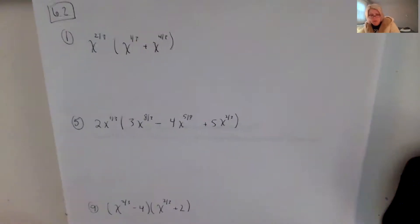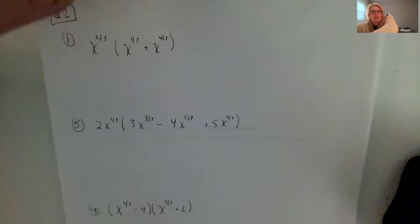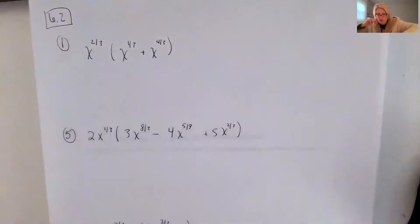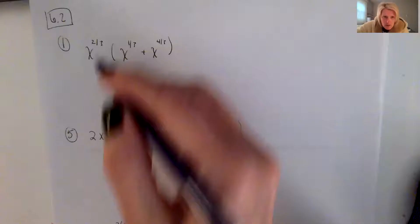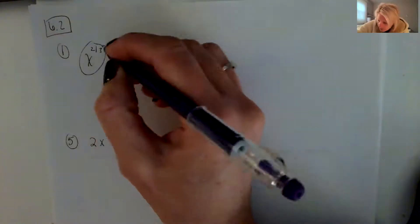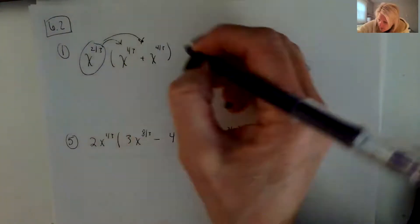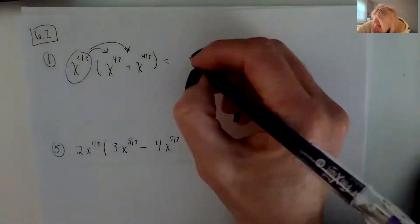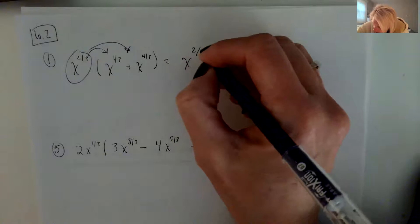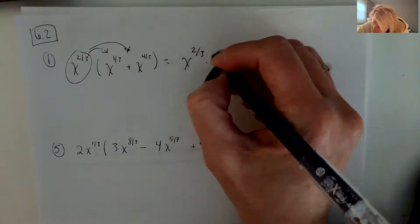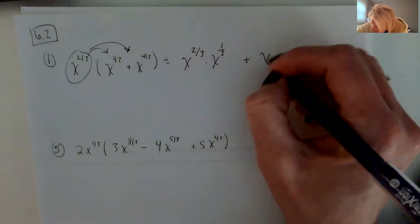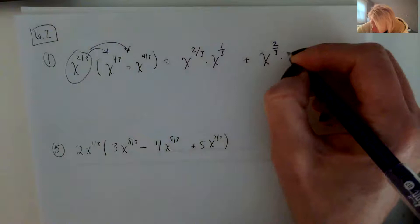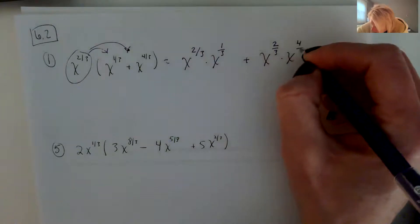We're going to start with problems 1, 5, 9, and 13. I'll be starting with 1 and every other odd, which I've been doing. The first thing we need to do here is distribute x to the 2/3 to the inside, so this becomes x to the 2/3 times x to the 1/3, plus x to the 2/3 times x to the 4/3.